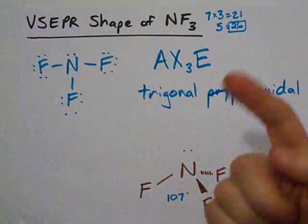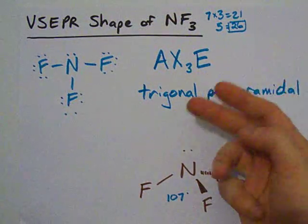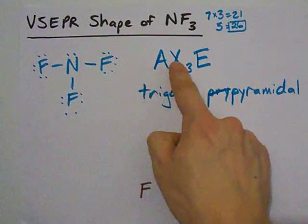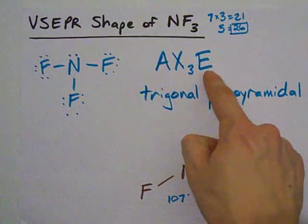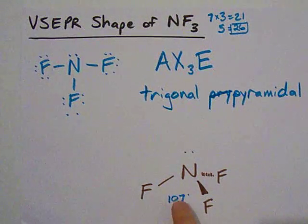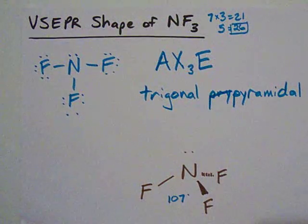So there you have it, NH3 is the same, NI3, NCL3, and NBR3. Anything that's AX3E, or three atoms, one lone pair is trigonal pyramidal. This is the geometric shape in 3D, and the bond angle should be about 107. Hey, good luck guys!